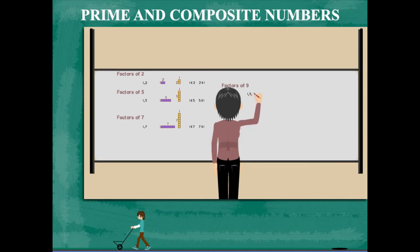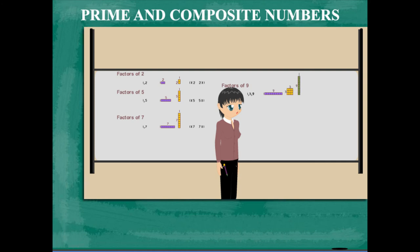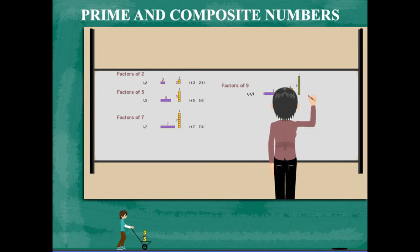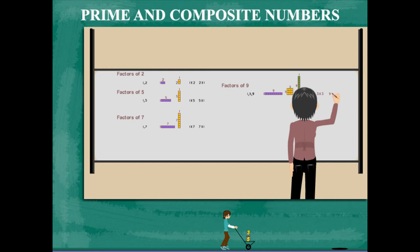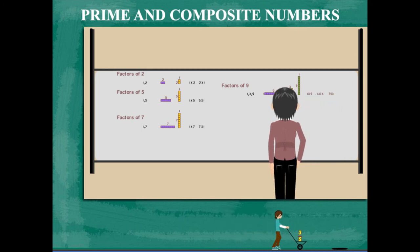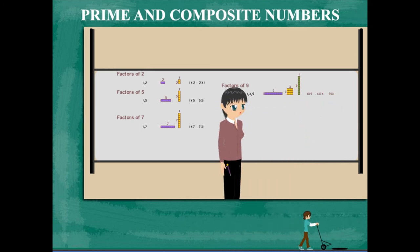Nancy Ma'am now writes the factors of 9. These are 1, 3 and 9. This is not a prime number but is called a composite number.